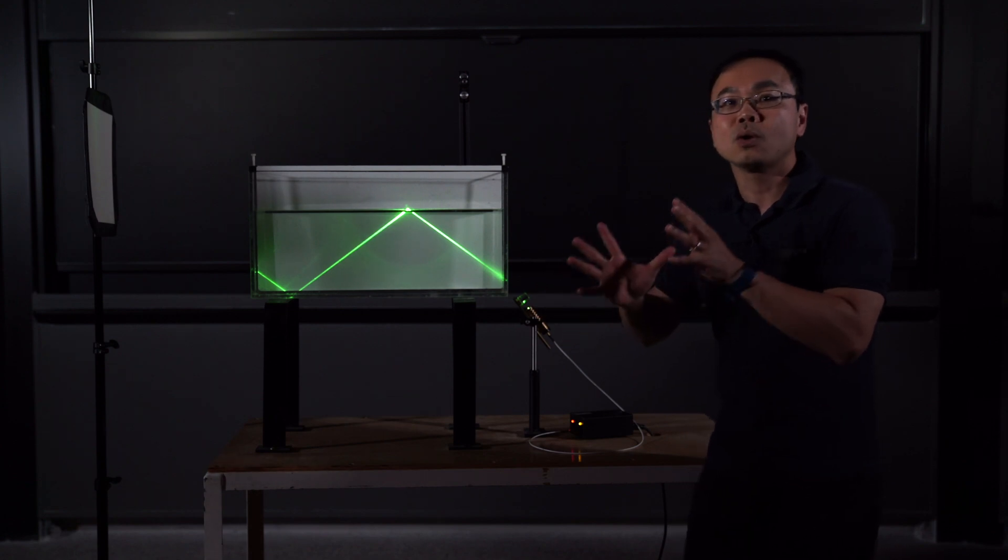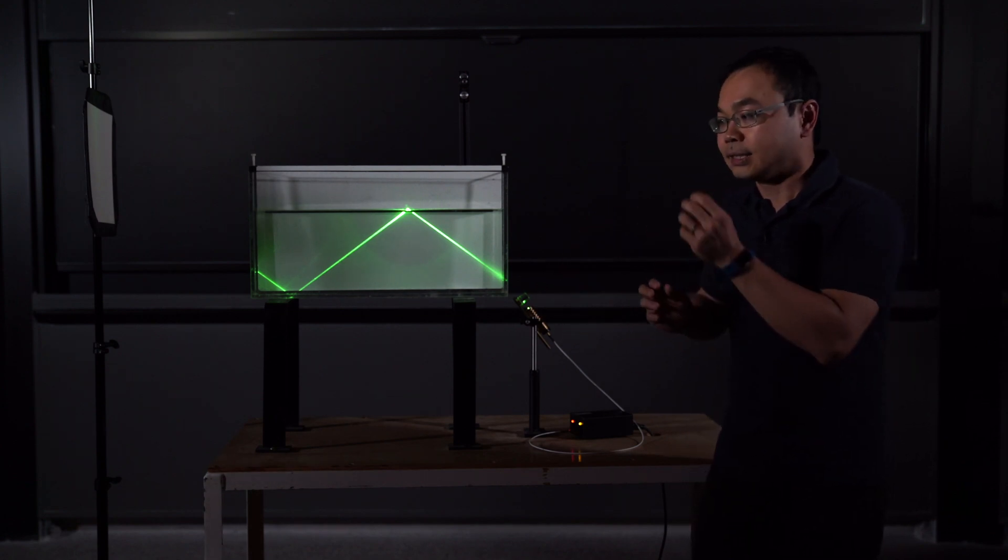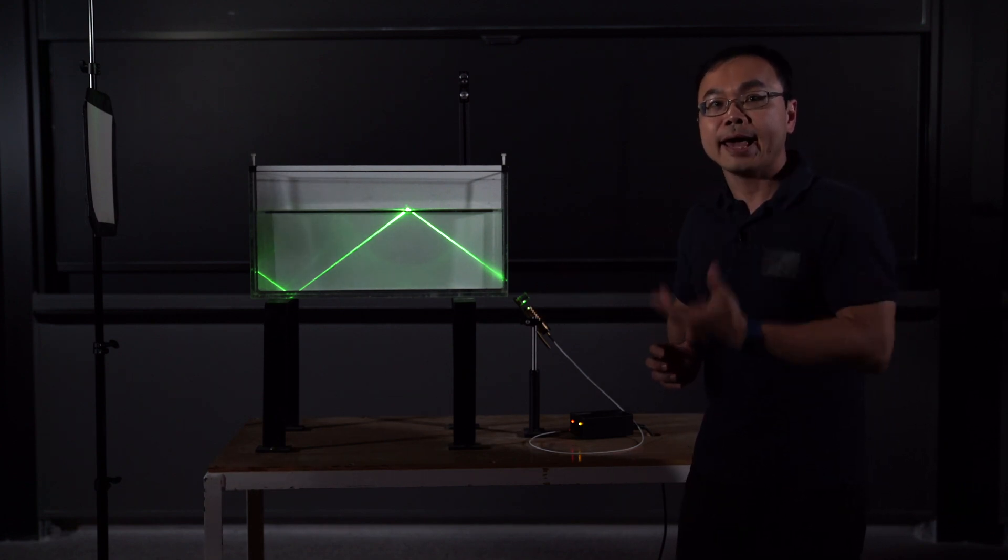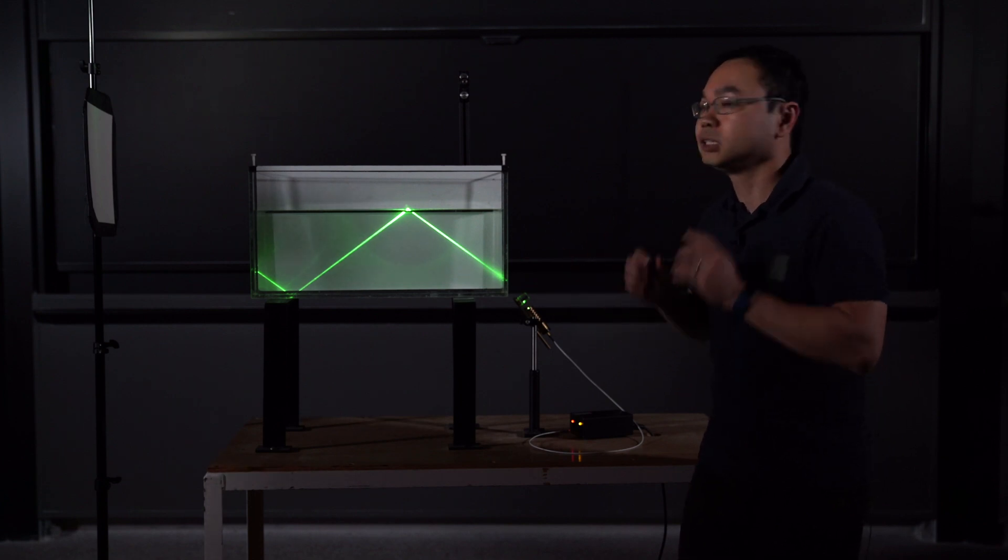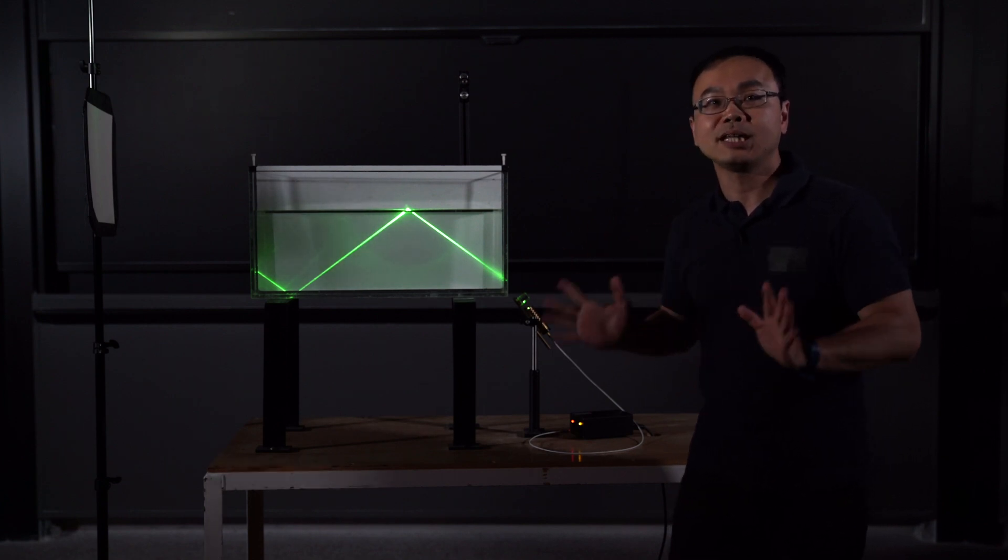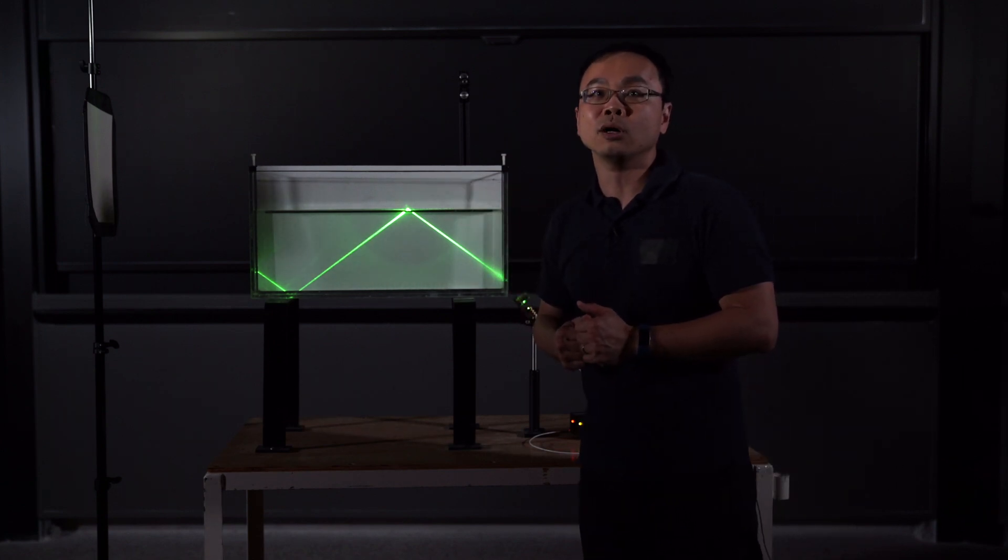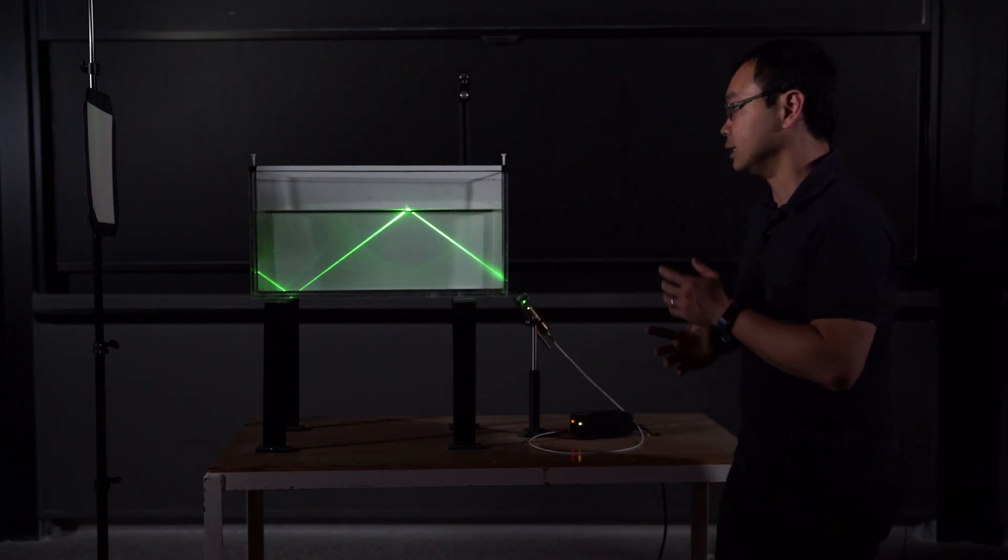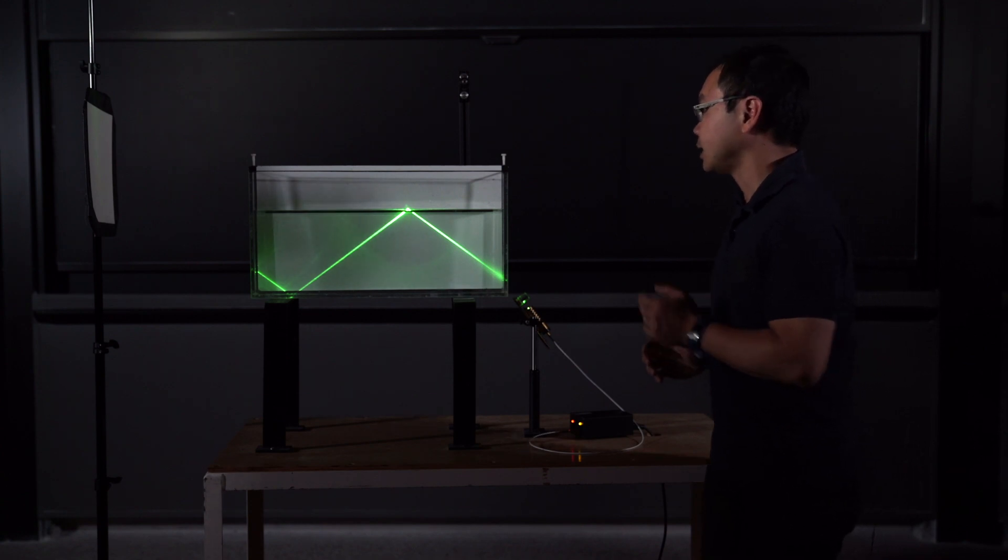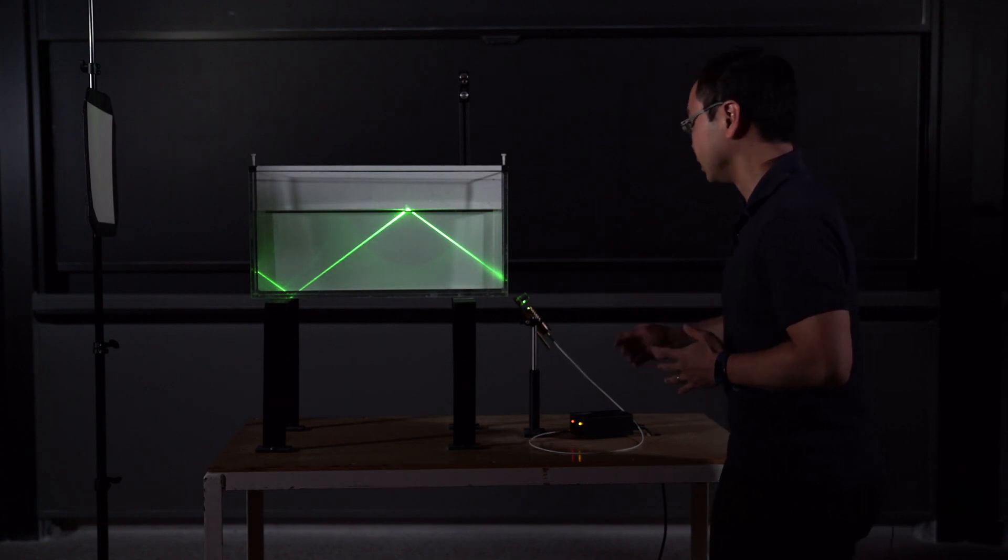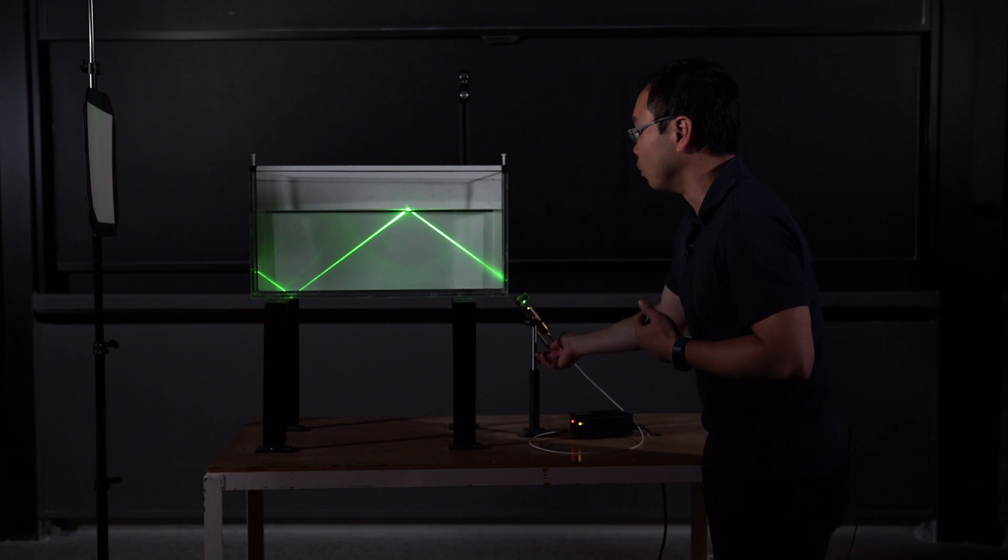And according to the mathematics, at some critical angle, if the incident angle is small enough, there will be a mathematical solution, such that the transmitted ray will show up at this critical angle. So let's immediately do this experiment by reducing slowly the incident angle.